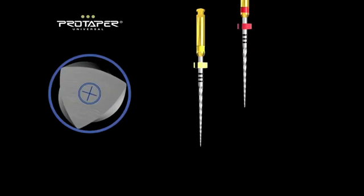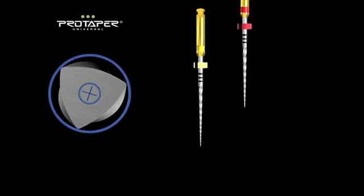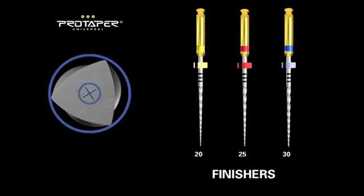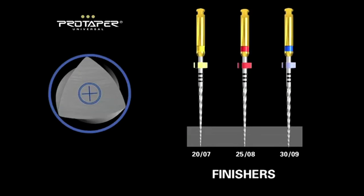For Gates Glidden users — we have GG1234 at D6789, so there is a way to rapidly pre-enlarge canals using Shaper X. The finishers total five instruments, but three are most frequently used. The color bands — yellow, red, and blue — correspond to tips of 20, 25, and 30. The tapers are 7, 8, and 9% respectively, but these tapers are limited to the apical one-third of the file. Behind this fixed taper, progressively decreasing percentage tapers continue over the rest of the active portion.